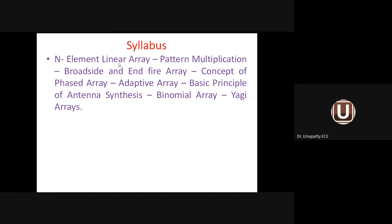For broadside array, the total electric field E_T expression and array factor were obtained, then five parameters derived. Same five parameters were obtained for the end-fire array. For end-fire array: definition, expression for E_T, expression for array factor, and five parameters. For broadside array: α = 0; for end-fire array: α = some value (negative to positive).